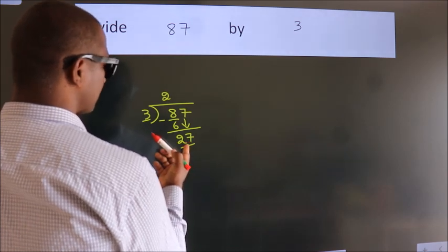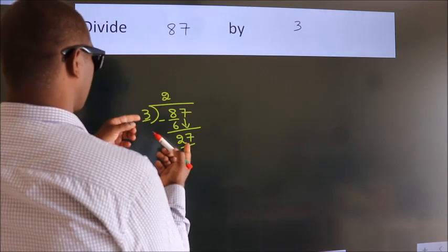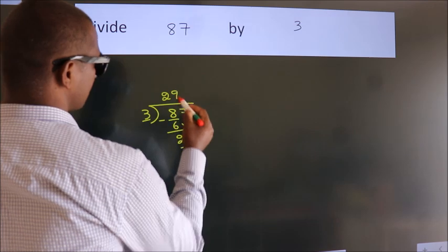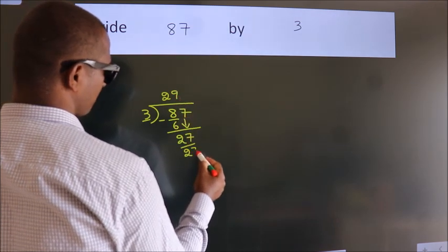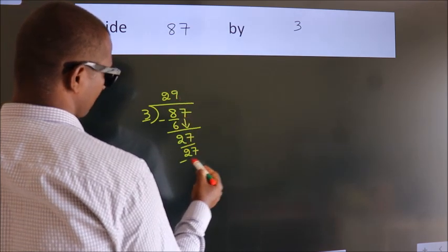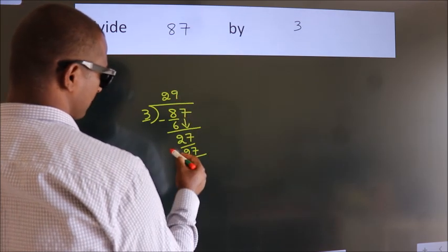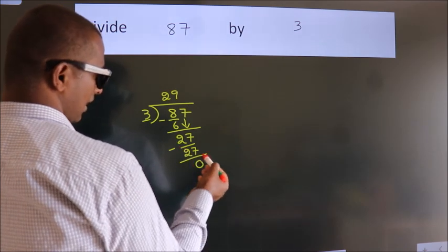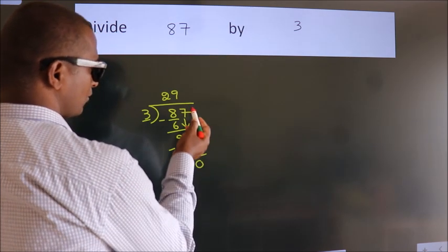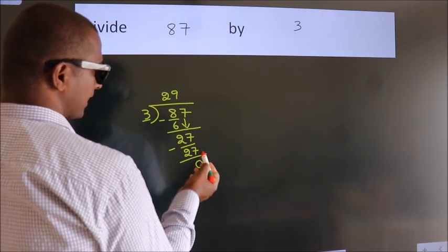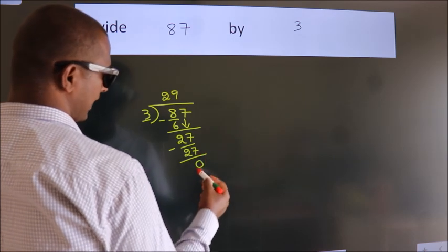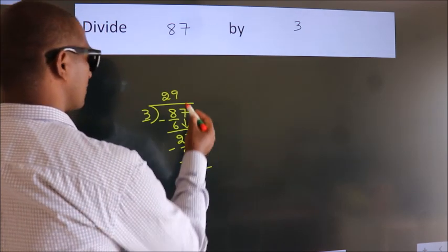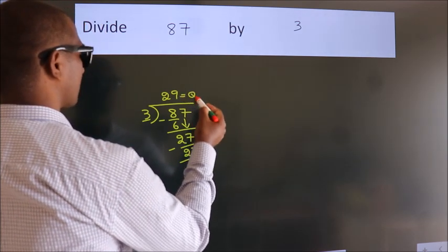When do we get 27 in the 3 times table? 3 nines are 27. Now we subtract and we get 0. After this, there are no more numbers to bring down and we got remainder 0. So this is our quotient.